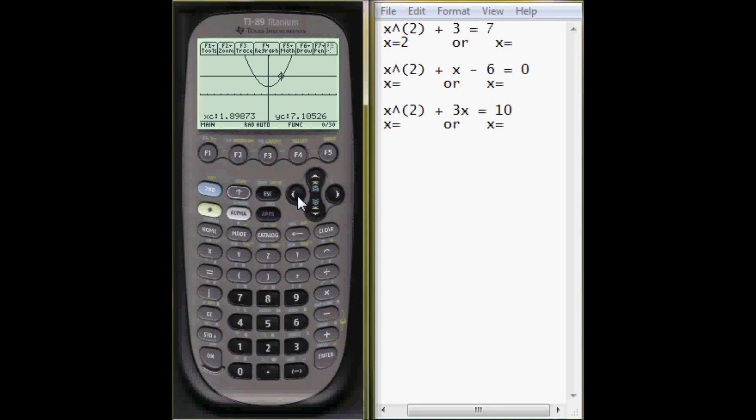And very similar, if you find the other intersect, press F5. Intersect is number 5. First curve, doesn't matter. Second curve, make sure there are two different curves. So, I want on the left of this intersect, right here where my mouse is.